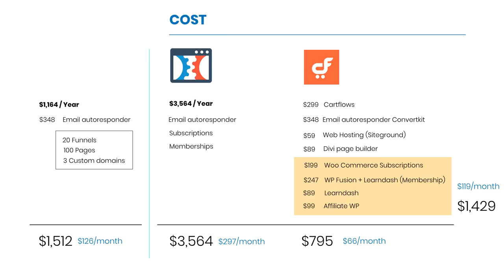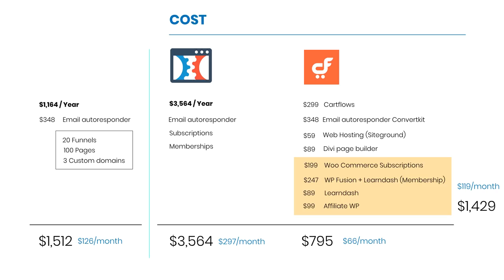On the WordPress side you have flexibility to pick and choose features. ClickFunnels also has a basic plan at $97 per month ($1,512/year), which gives you 20 funnels, 100 pages, and 3 custom domains — but no subscriptions, memberships, or email autoresponder. Adding your own email autoresponder brings that to about $126 per month for the basic ClickFunnels setup.